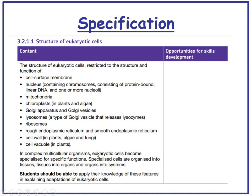In complex multicellular organisms, eukaryotic cells become specialised for specific functions. Specialised cells are organised into tissues, tissues into organs, and organs into systems. You should be able to apply your knowledge of these features in explaining adaptations of eukaryotic cells.